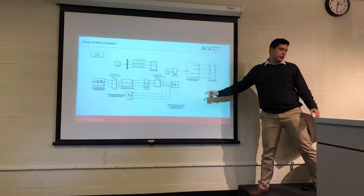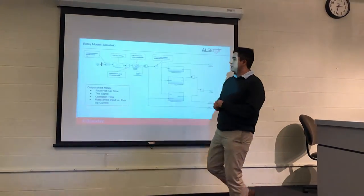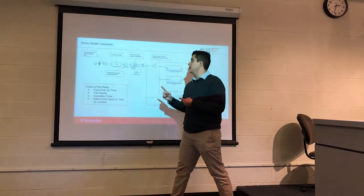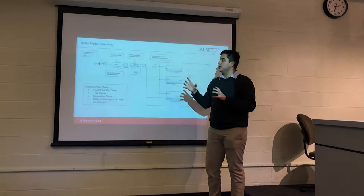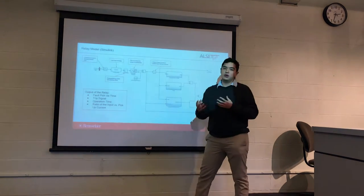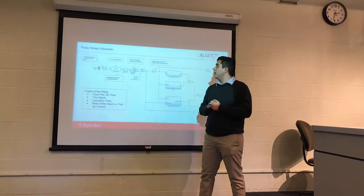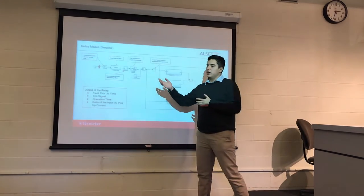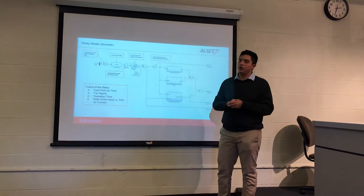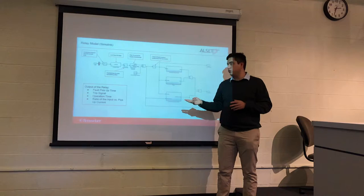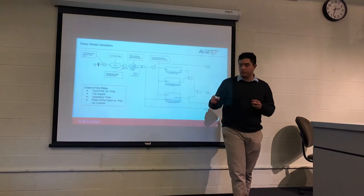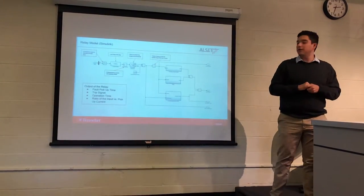So now we're looking inside of the square. The first thing we have is we would take the three phases and only take one of the phases in order to analyze it. And then we would discretize it by using a zero-order holder. We filter and down-sample in order to take away the anti-aliasing effect. And then we use a filter in order to get the signal's fundamental. We convert it into RMS and then we compare it to our fault pick-up current that is previously set in order to eventually get out of the relay the fault pick-up time, the trip signal, the operation time, and then the ratio between input and pick-up current.